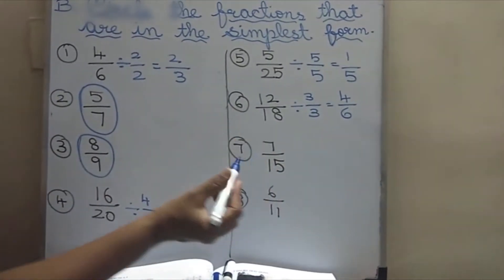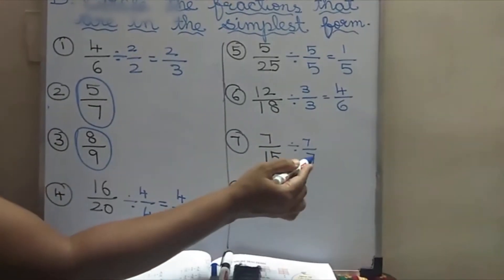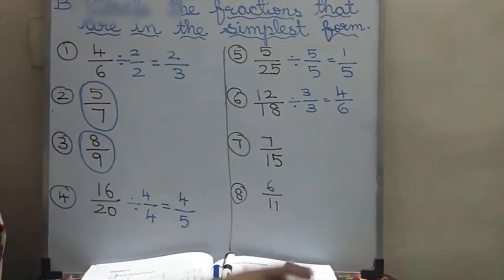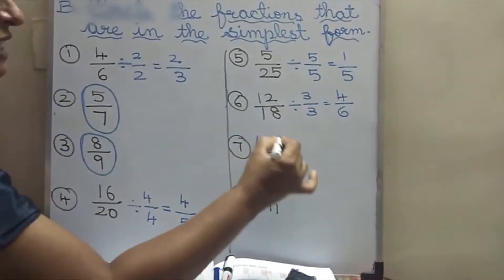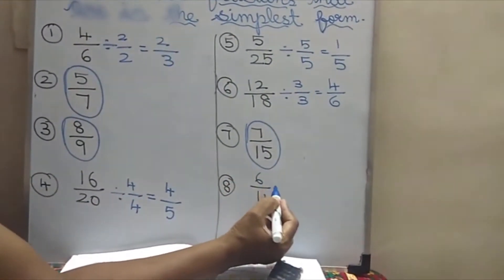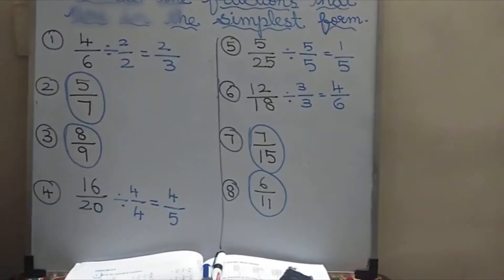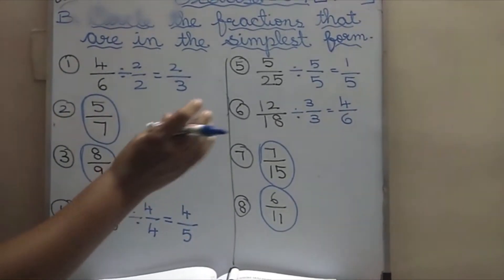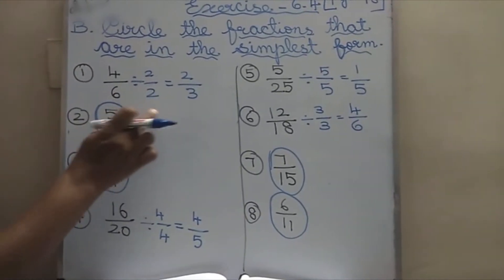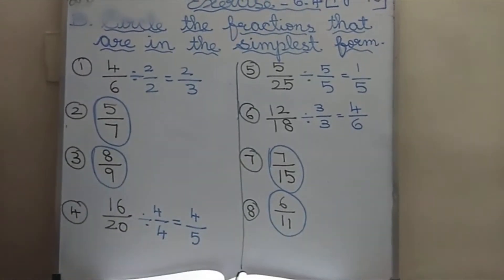7 by 15 — can you put 7 by 7 like this? In 7 tables, 15 does not go. You can't divide it further — so this is the simplest form. Likewise, 6 by 11 also — you can't divide in the same tables. So this is also the simplest form. Which we can divide in the same tables, you should not circle. Which we can't divide in the same tables, you have to circle. That is called the simplest form.